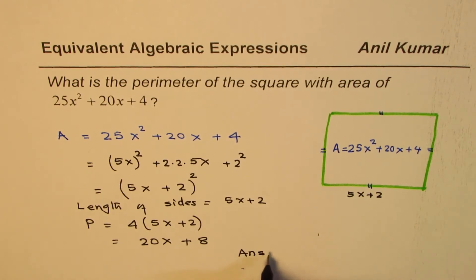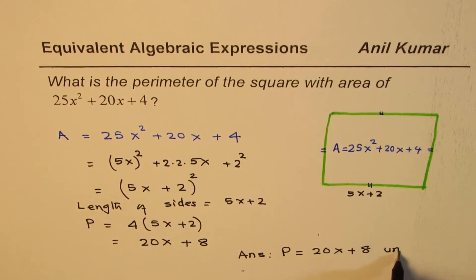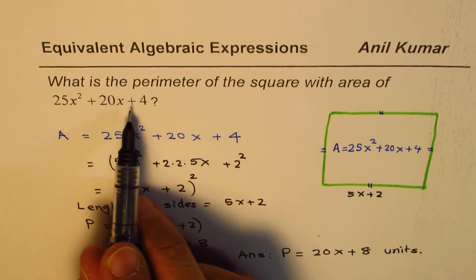We can write down our answer: the perimeter of this square is 20x + 8 units.